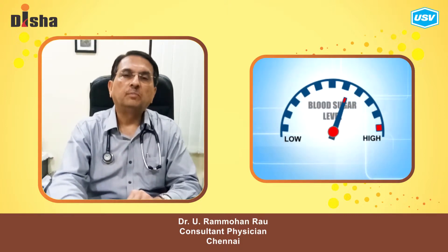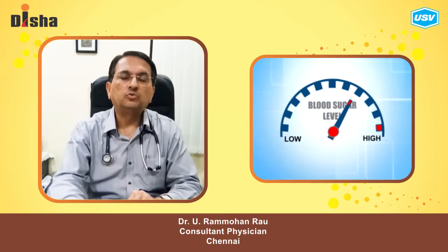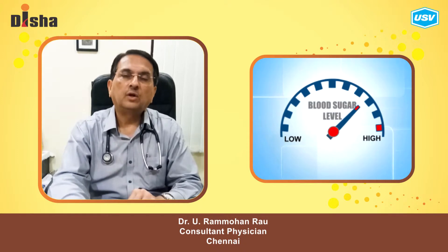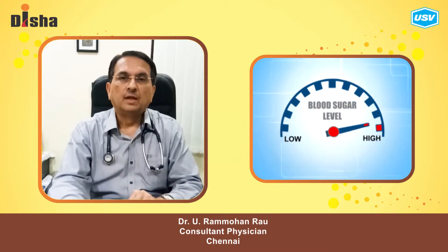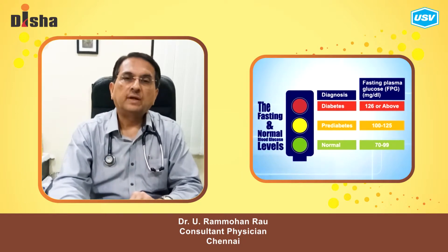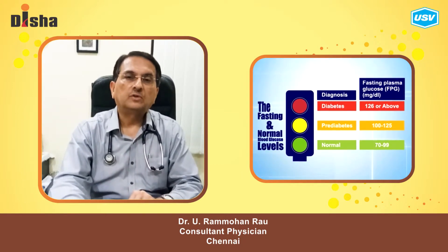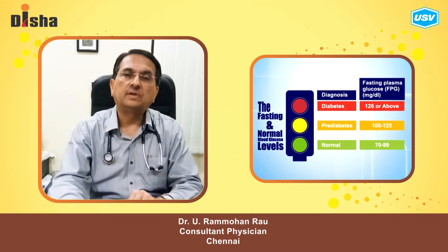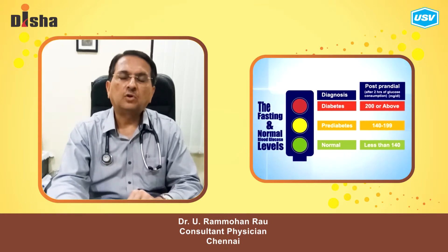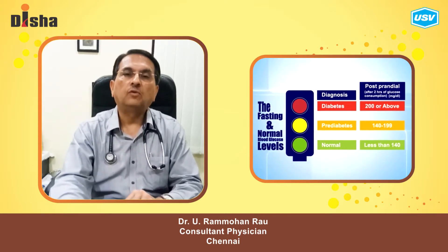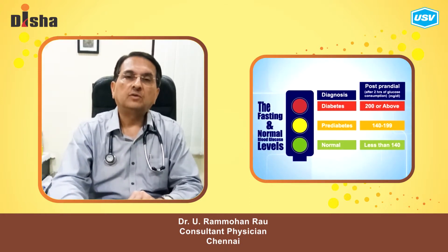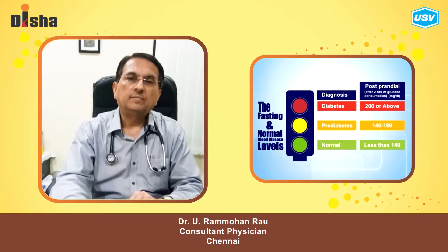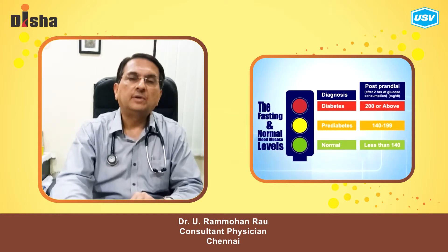Diabetes is a disease of many organs whose main symptom is a high level of sugar in the blood. Normal sugar when tested on an empty stomach should be below 100 milligrams per deciliter, and after a good meal it should not exceed 140 milligrams per deciliter. When the level of sugar exceeds 200 after a meal, it is called diabetes mellitus.